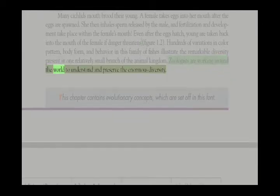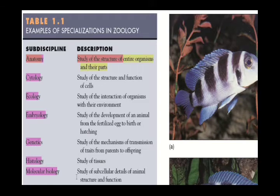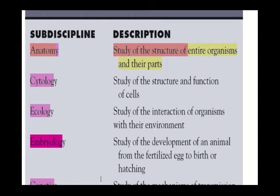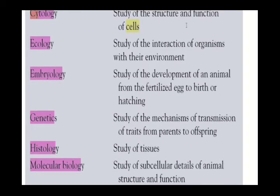Zoologists work around the world to understand animal life. Table 1.1 shows examples of specializations in zoology. Anatomy is the study of the structure of entire organisms and their parts. Cytology — where 'cyto' refers to the cell — is the study of the structure and function of cells. Ecology refers to the ecosystem; it is the study of the interaction of organisms with their environment.